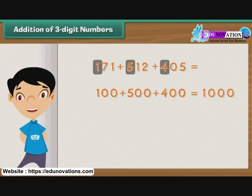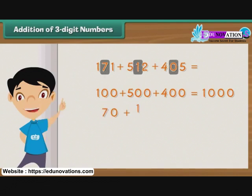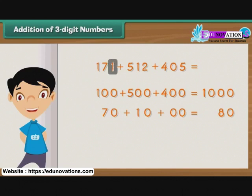Now we proceed to add the digits at the tens place, that is 7, 1, and 0. We add 70, 10, and 00 to get 80. Finally, we add the digits at the ones place, that is 1, 2, and 5, to get 8.